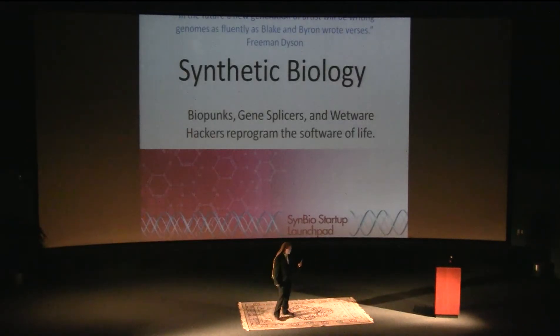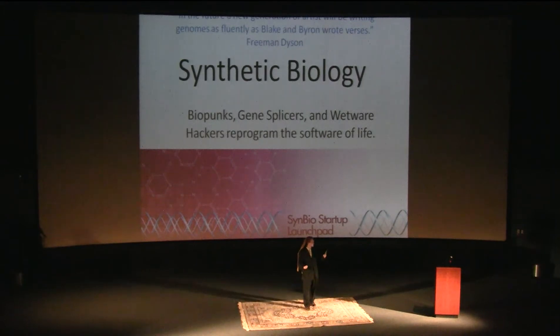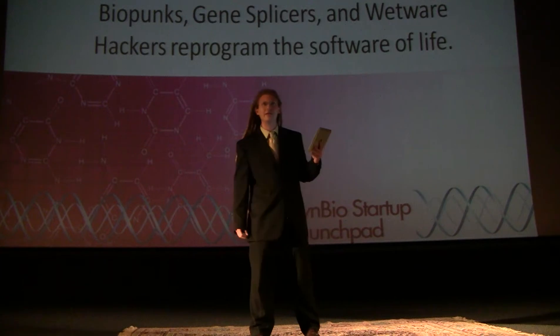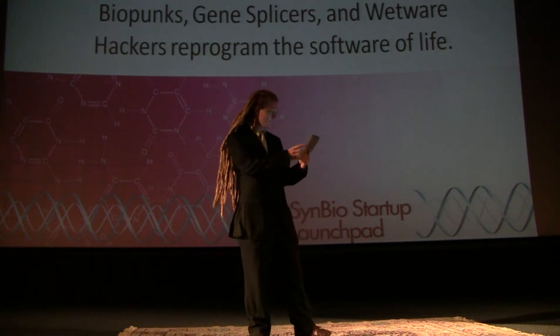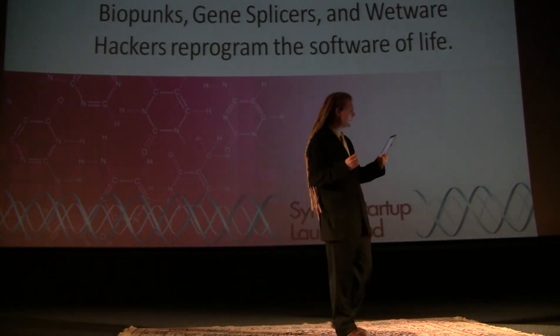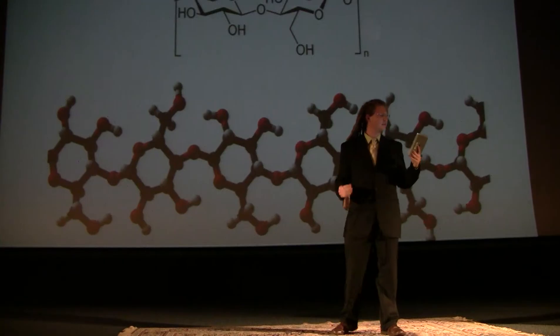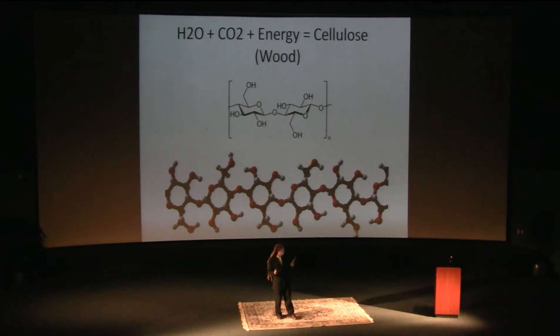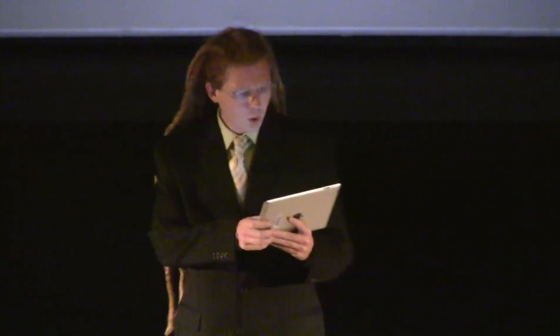What is synthetic biology? Biology is technology. Metabolism is an information process. Life is software — digital code that can be hacked. Genes are linear sequences of digital executable code. A tree is running a software program on a chemical processor that inputs water, carbon dioxide, and energy, and outputs cellulose, or wood. Wood is created from the remixed atoms of air and water.